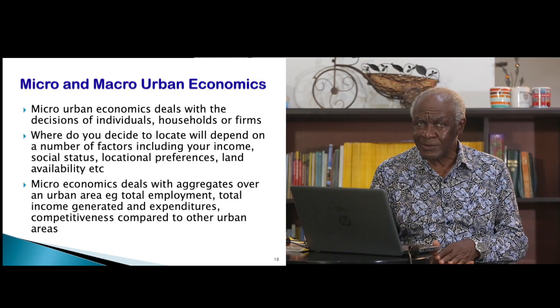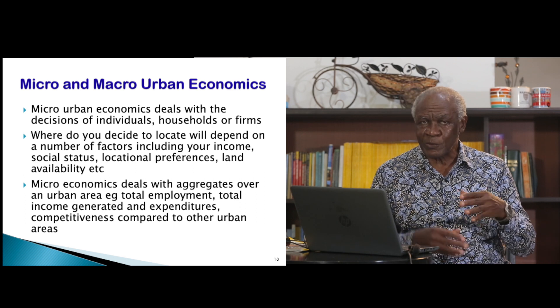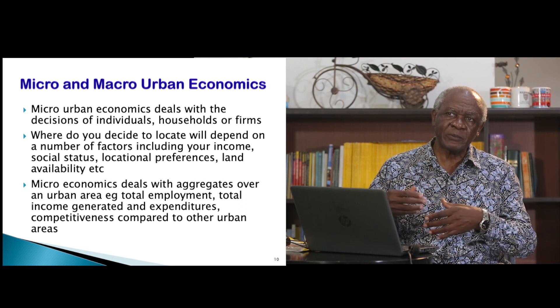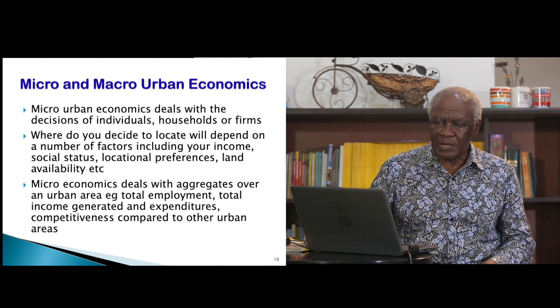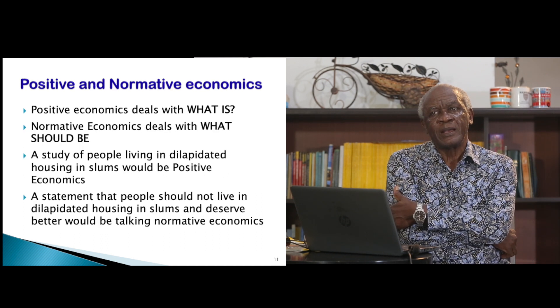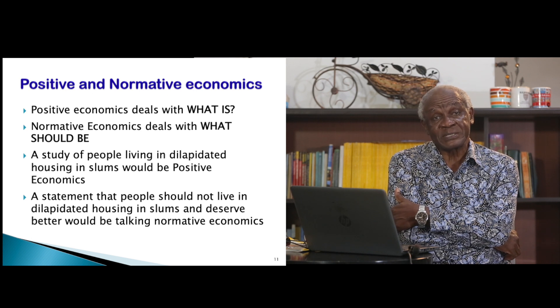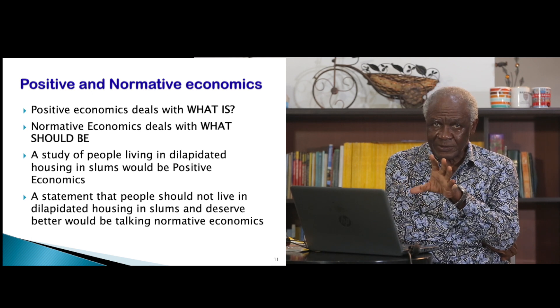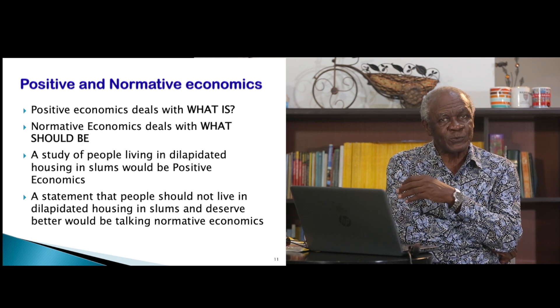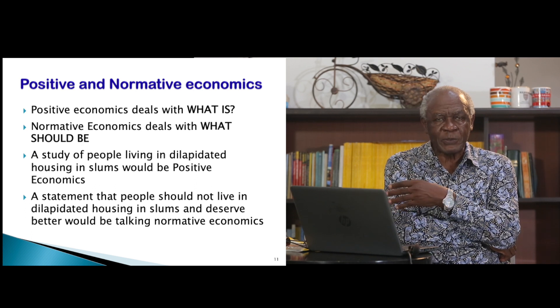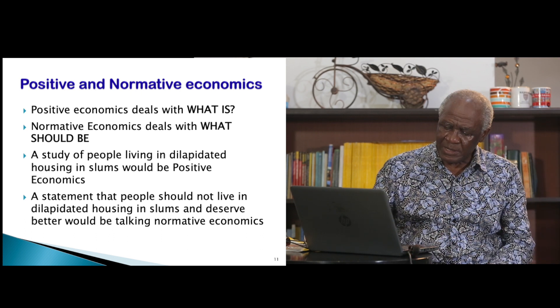Economics can help us understand this. Economics can be divided into micro and macro branches. The micro branch looks at the individual behavior of households and firms, and the macro looks at the whole urban economy in general. There is also the question of positive and normative economics. Positive economics talks about what is happening, while normative is about what should be — for example, that people should not live in poor housing. That would be normative economics.